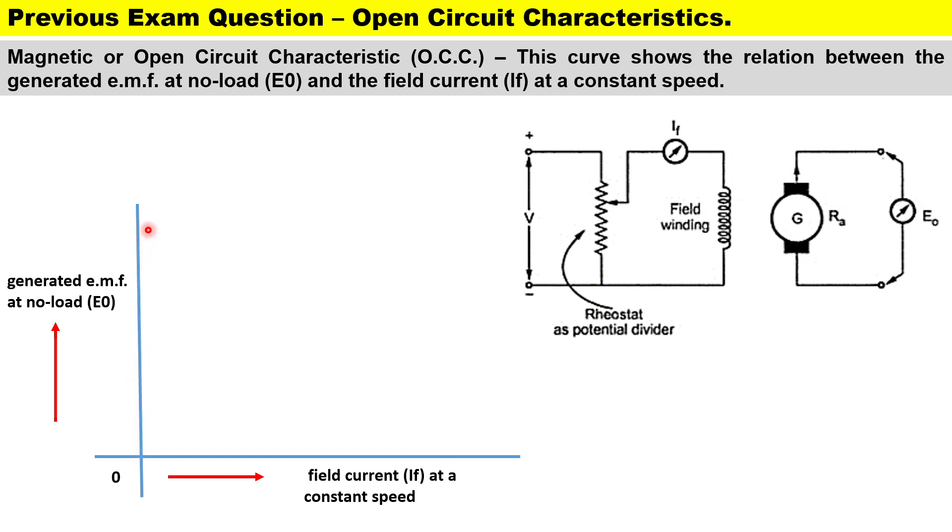What's important to note is that our EMF, even though the field current is zero at this point on the axis, we'll find that there is a small amount of EMF and that is generated by something called residual magnetism. Residual magnetism is the magnetism that is left behind in the material even when current is removed.